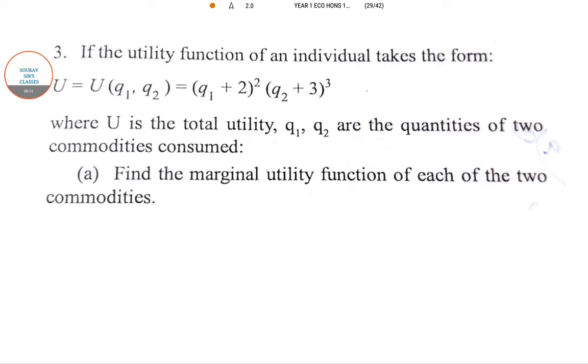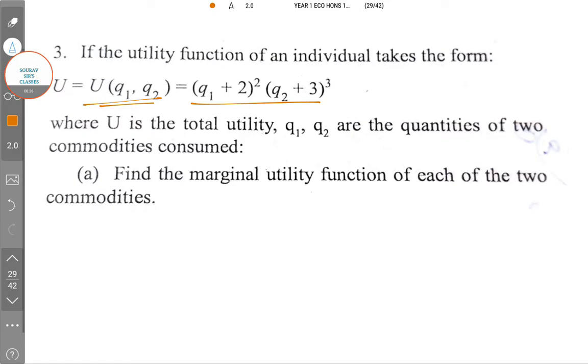So what they have given here is if the utility function of an individual takes the form U = U(Q1, Q2) where U is the total utility, then find the marginal utility function of each of the two commodities.